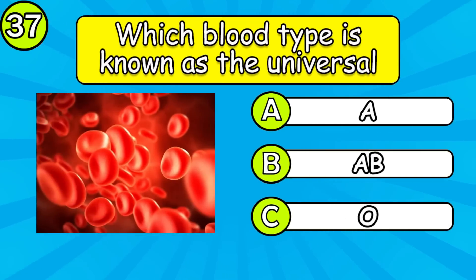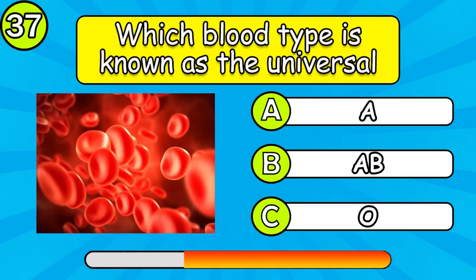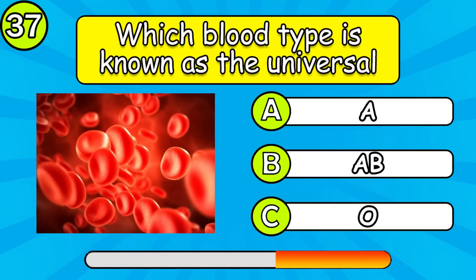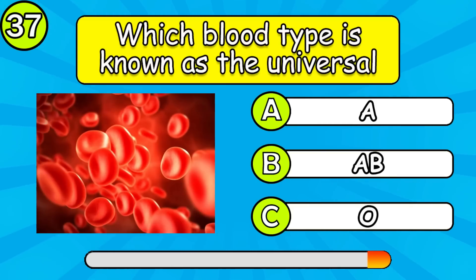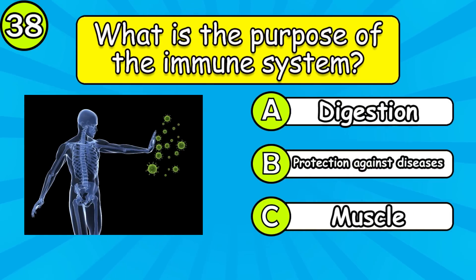Which blood type is known as the universal donor? What is the purpose of the immune system?